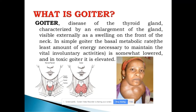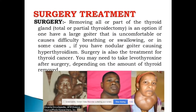A goiter is a disease of the thyroid gland in which the gland enlarges and can be seen as a visible swelling in the front of the neck. The goiter can increase thyroid activity depending on its type. Treatment often involves removing all or part of the thyroid gland. It is usually uncomfortable for the patient and could cause difficulty breathing or swallowing, and may even cause hyperthyroidism.